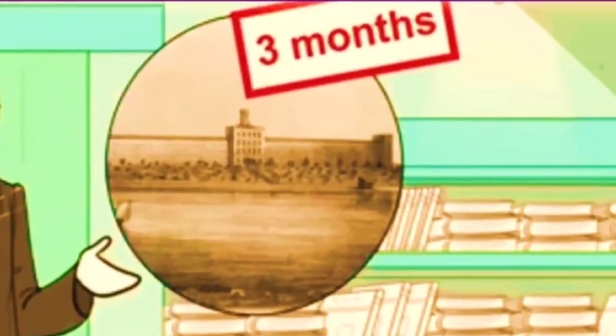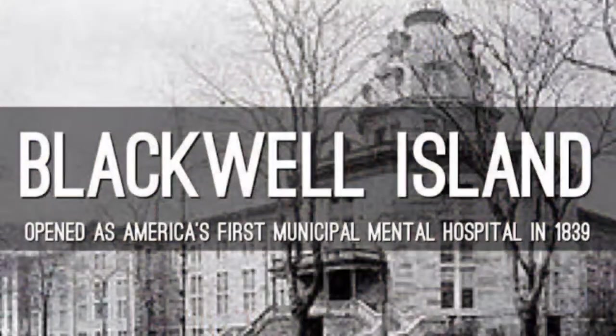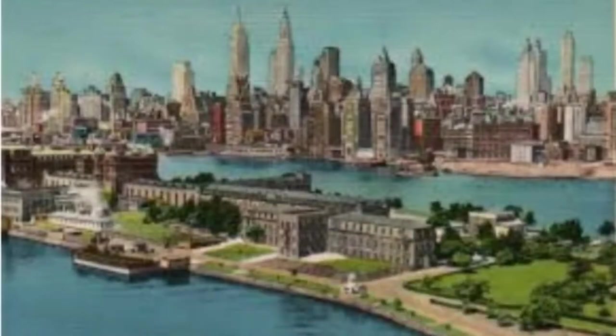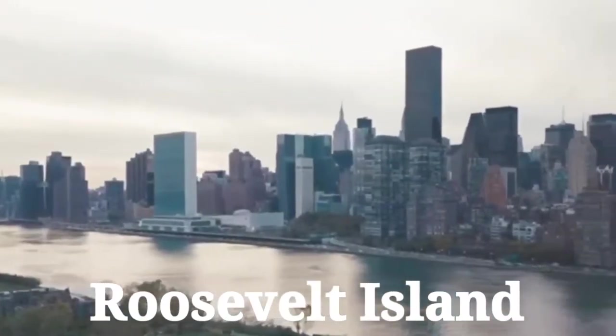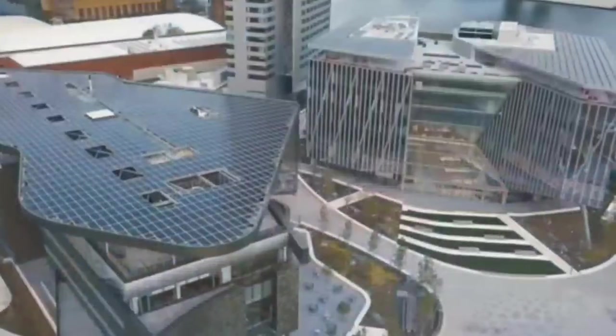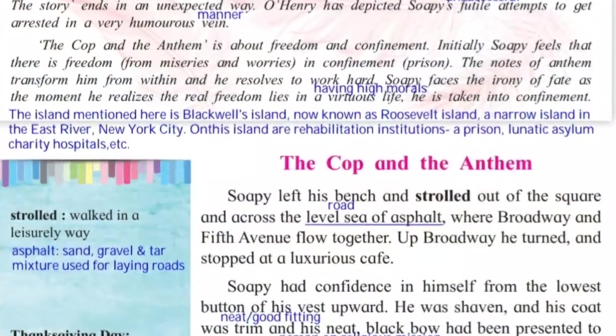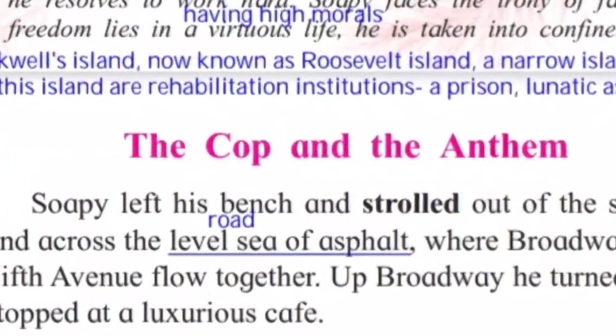Is story mein jis island ka zikr hua hai jahaan Soapy jaana chahta hai, vo hai Blackwell's Island, jise ab Roosevelt Island kaha jaata hai. Ye ek chhota sa island hai New York City mein East River par. Is island par rehabilitation institutions hain jaise Prison, Lunatic Asylum, Charity Hospital waghaira. Ab hum actual lesson start karte hain — The Cop and the Anthem. Apne finger rakhein textbook par, page number 28.